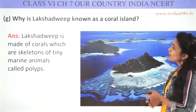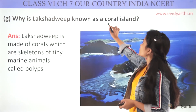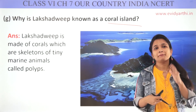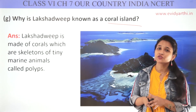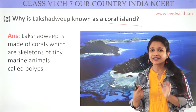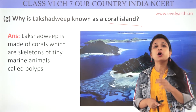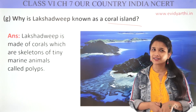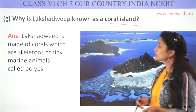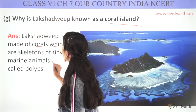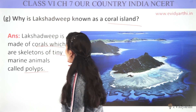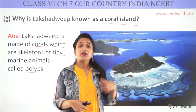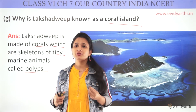Question G: why is Lakshadweep known as a coral island? Lakshadweep is called a coral island because it is made of corals, which are the skeletons of tiny marine animals called polyps. When these marine animals die, their skeletons form coral, which is why we call these coral islands. The coral reefs are very colourful and diverse.